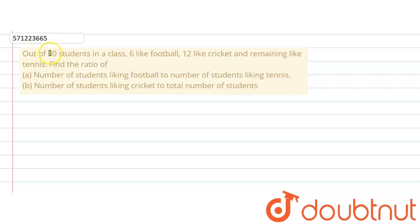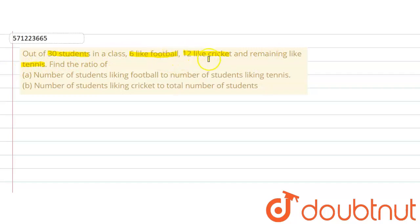The given question says that out of 30 students in a class, 6 like football, cricket is liked by 12, and the remaining like tennis. So there are 3 sports. We are asked to find the ratio of number of students liking football to the number of students liking tennis.